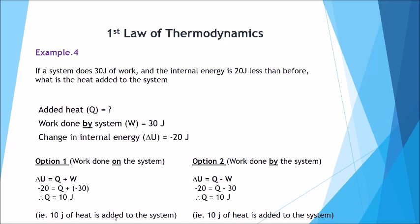From a physics equation perspective, delta U equals Q minus W, where W is the work done by the system. The change in internal energy was negative 20 joules, Q is our unknown, and we're taking away the work done by the system — taking away 30. Our mathematics gives us 10 joules of heat added to the system.